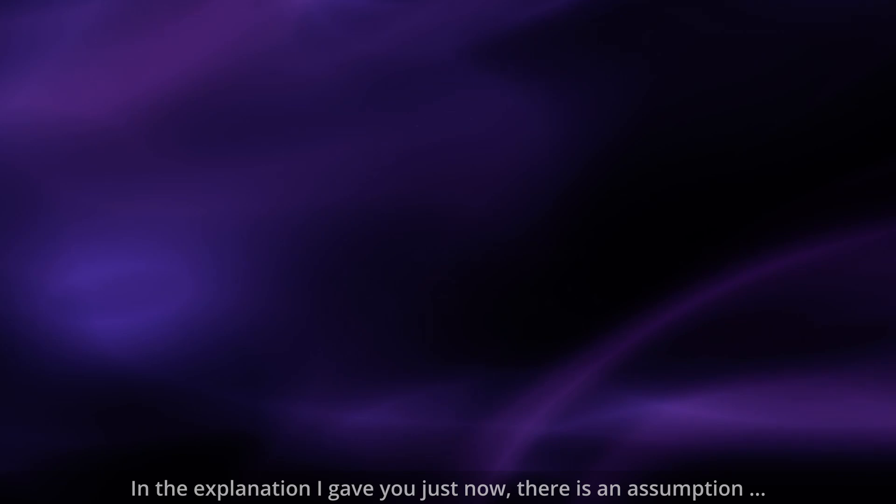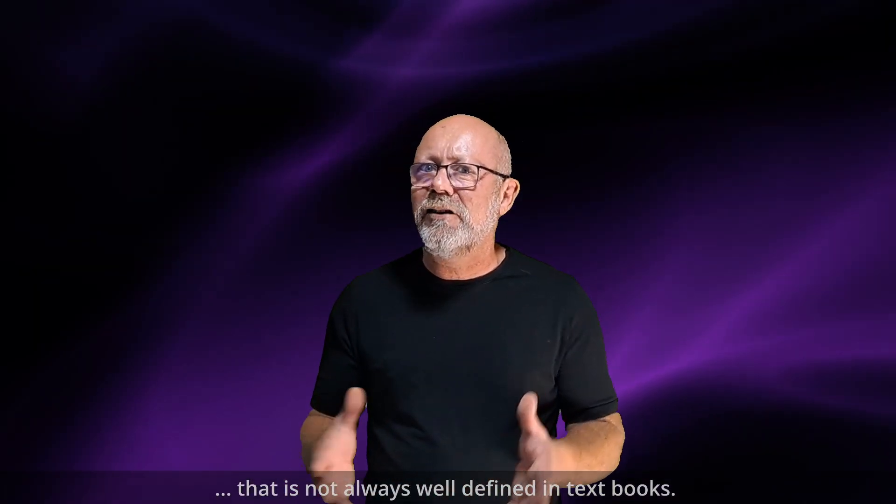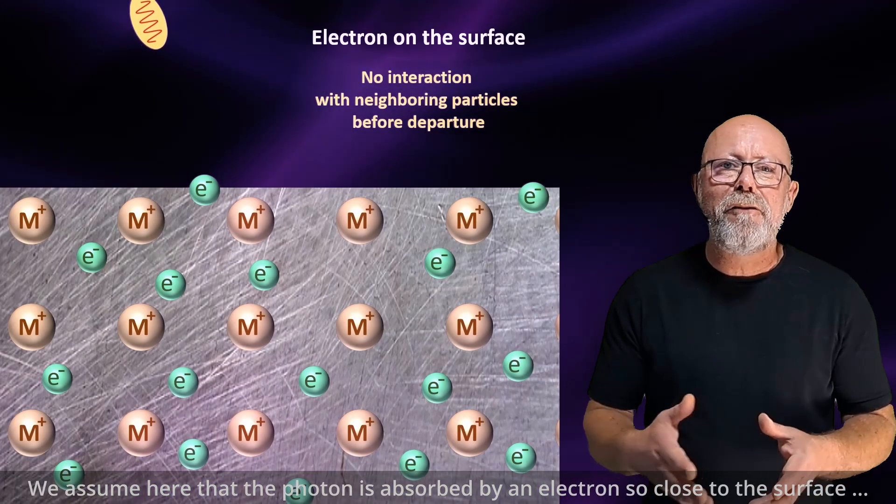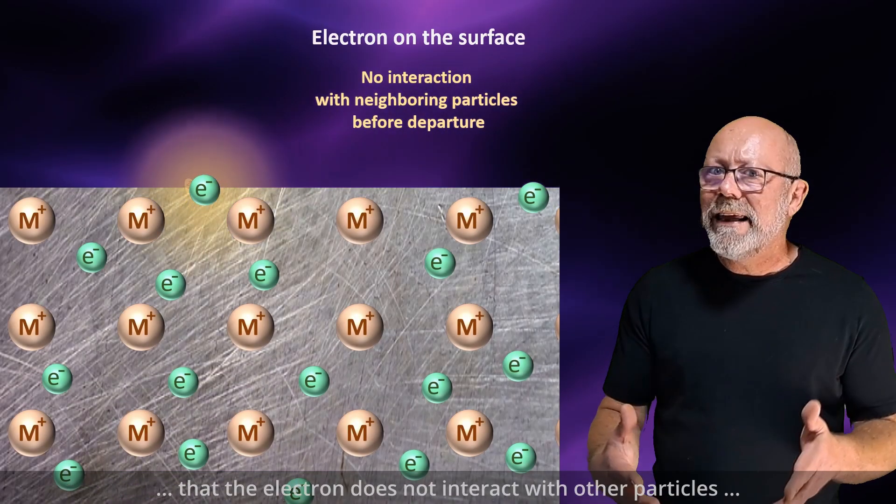In the explanation I gave you just now, there is an assumption that is not always well defined in textbooks. We assume here that the photon is absorbed by an electron so close to the surface that the electron does not interact with other particles of the material before getting ejected.